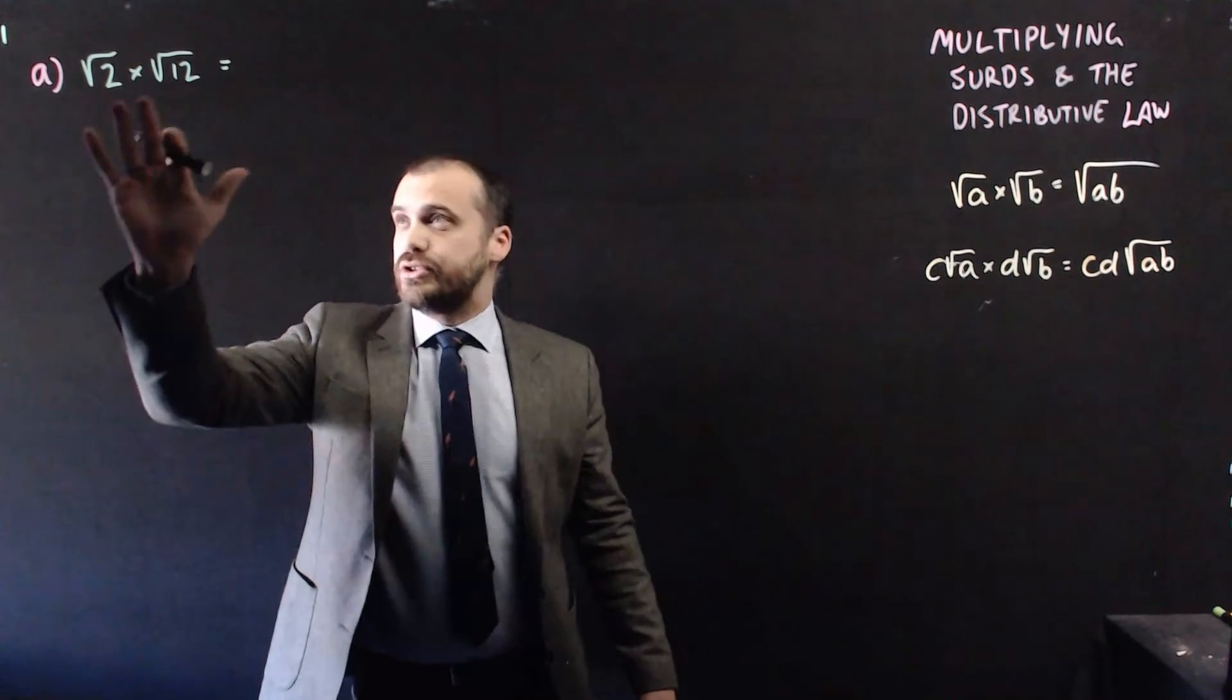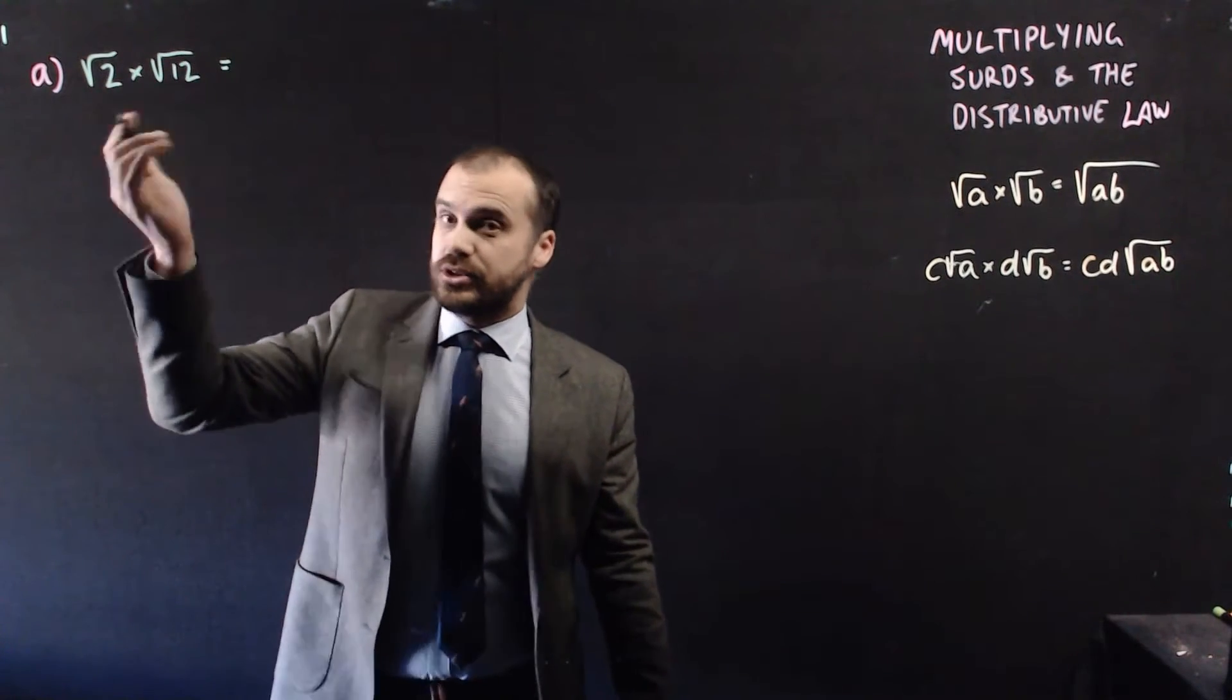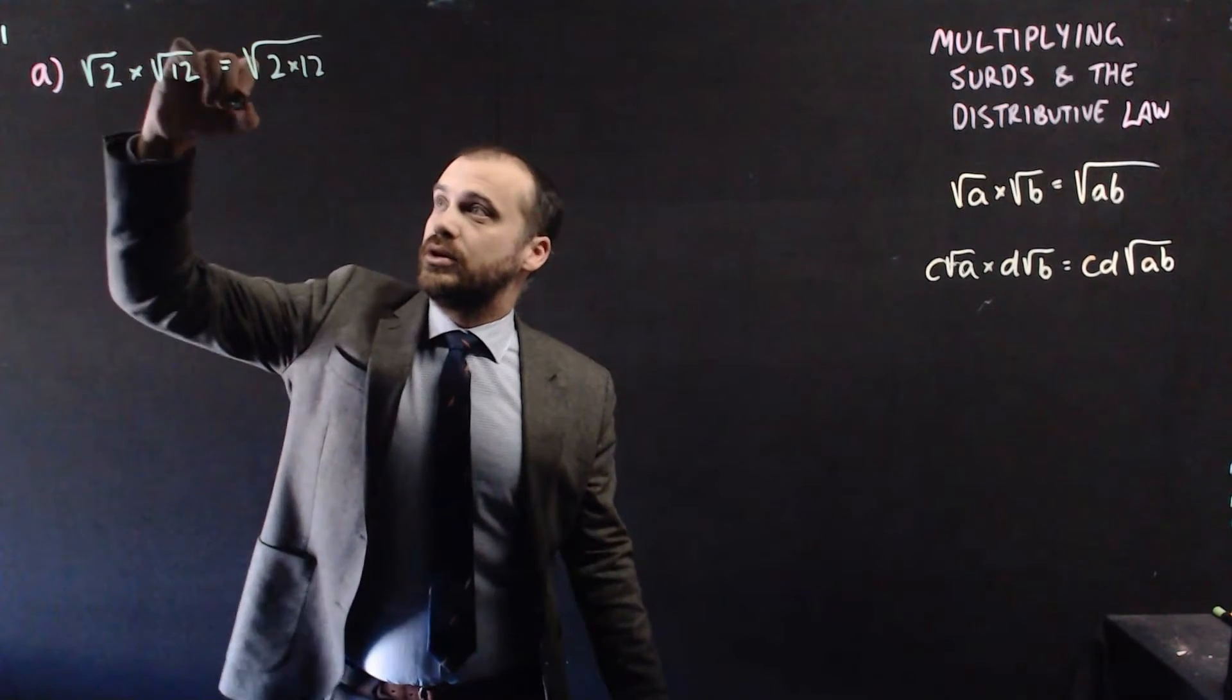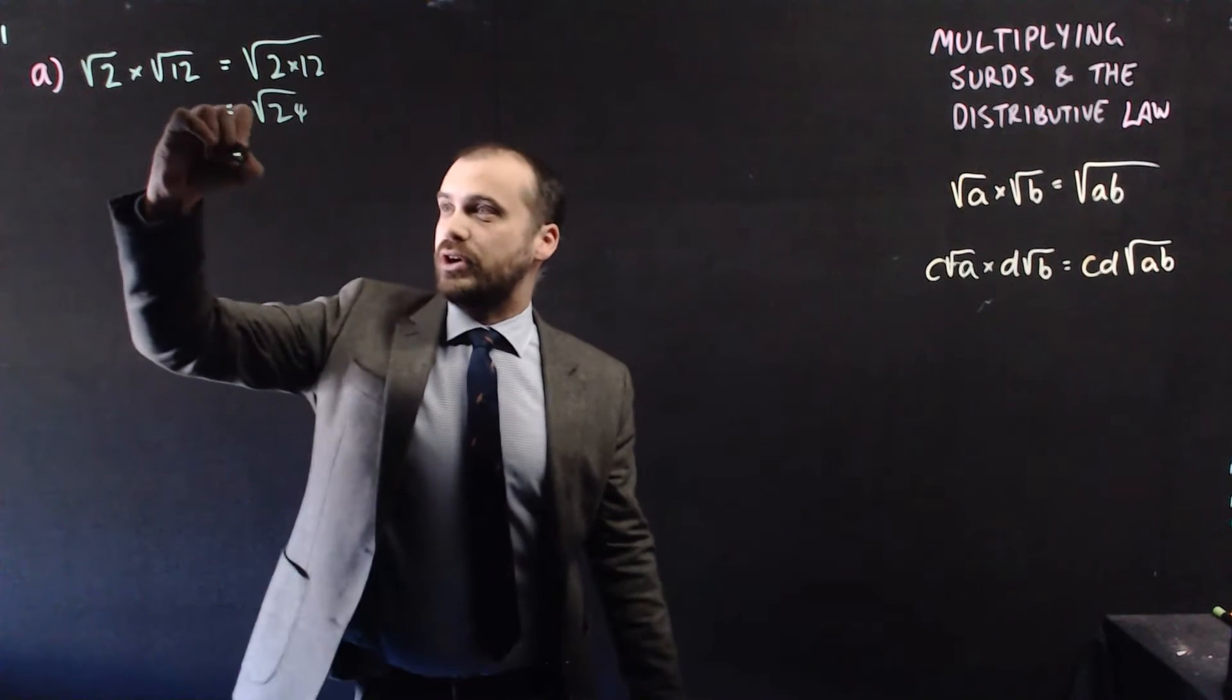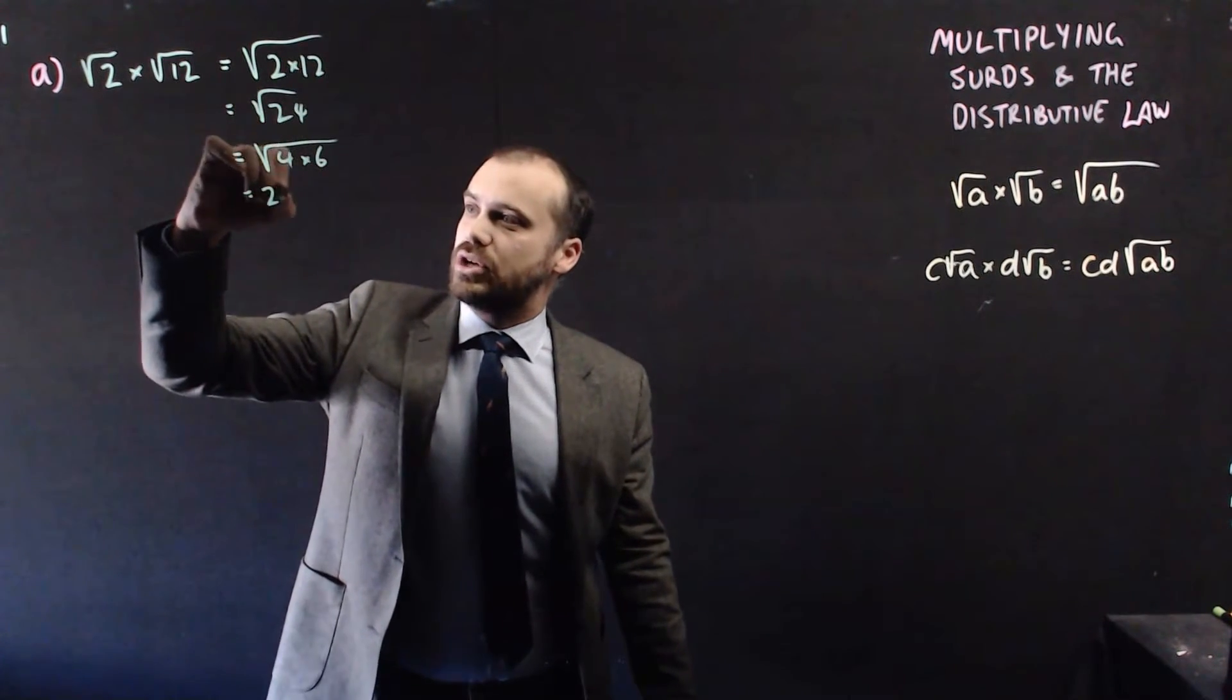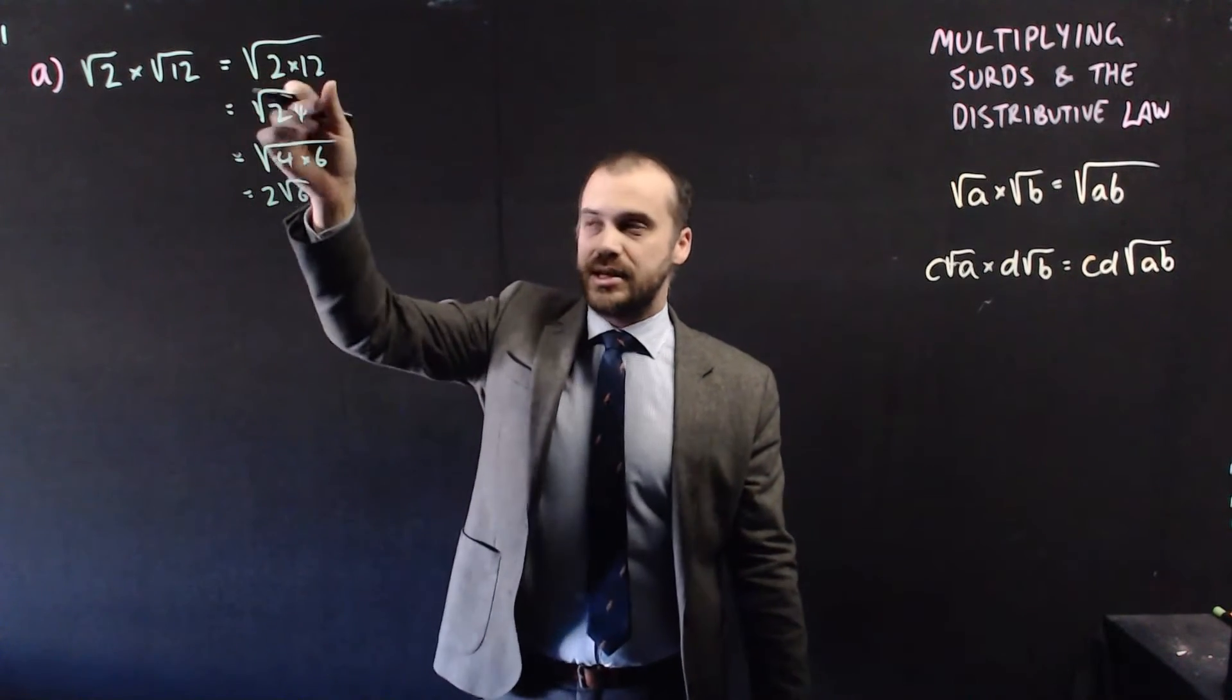So here we have root 2 times root 12. We just multiply the bits underneath the surds by each other, we get root 2 times 12, which is root 24. And don't forget to simplify it, that's the same as 4 times 6, so we get 2 root 6. So the multiplying bit's the easy bit, and then we simplify.